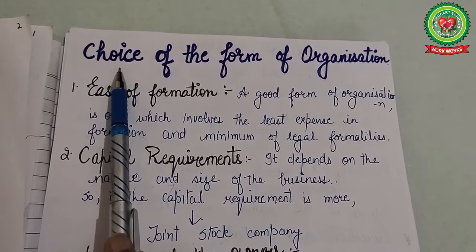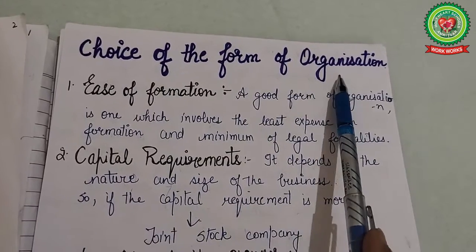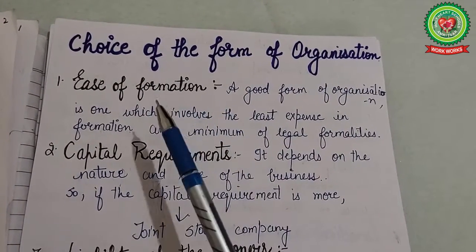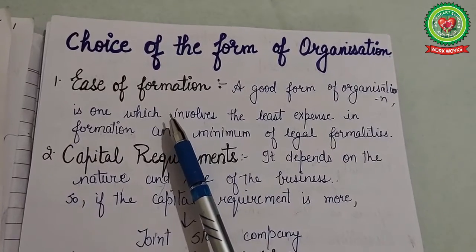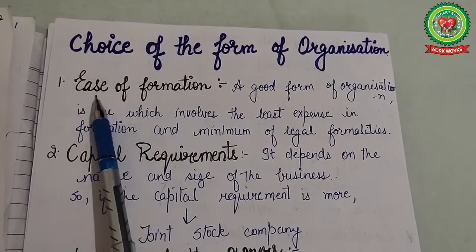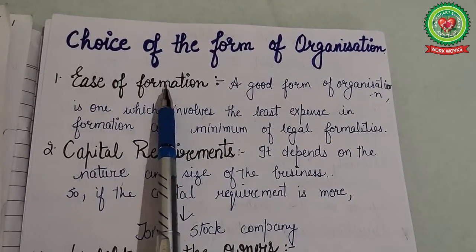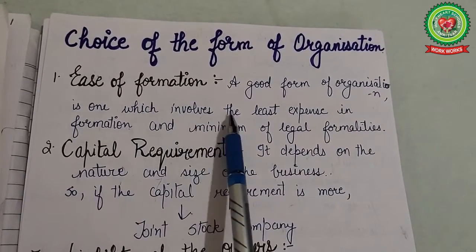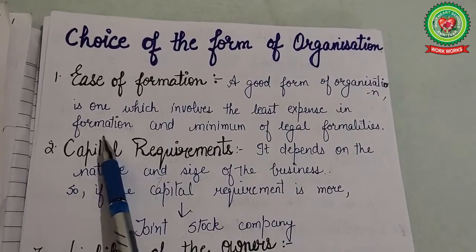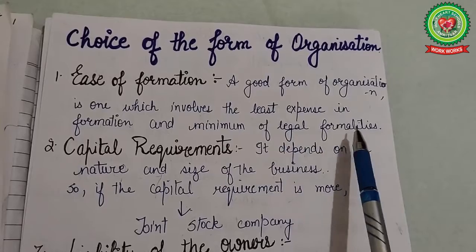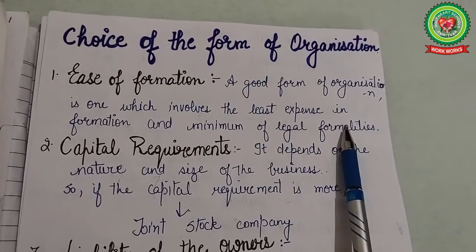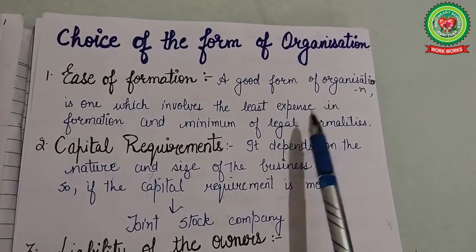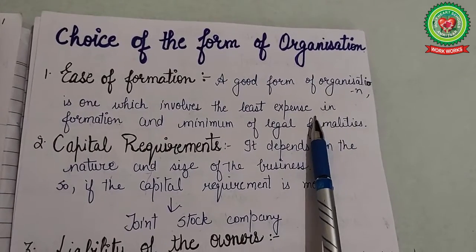Our first topic is choice of the form of organization. A businessman has to choose a suitable form of business organization, and it depends upon various factors. The first factor is ease of formation — a good form of organization involves the least expense in formation and minimum legal formalities. For small activities, sole proprietorship is the easiest and best form compared to the company form.